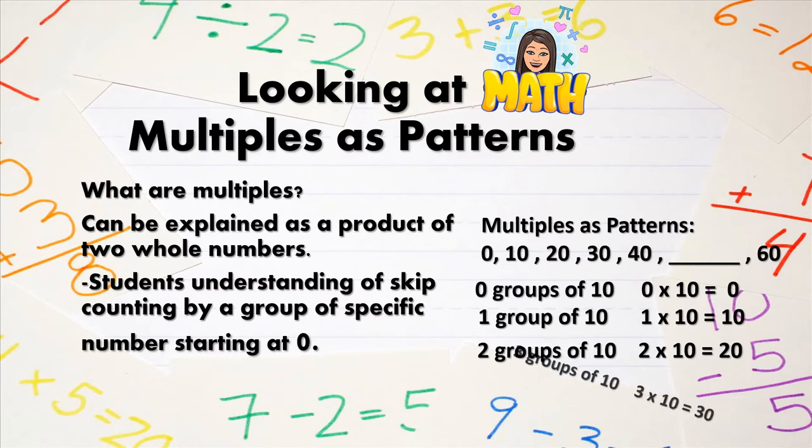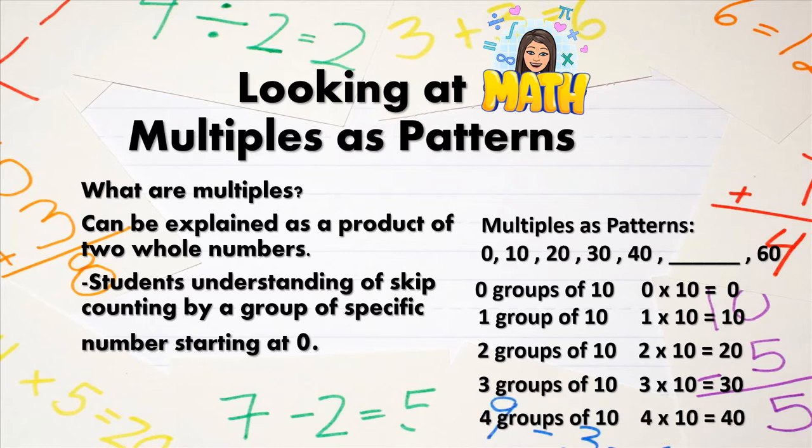If we were to add another group of 10, that would mean 3 times 10 equals 30, which is our next multiple in our pattern. And finally, if we add another group of 10, now we have 40. And that tells us that now we have 4 groups of 10.